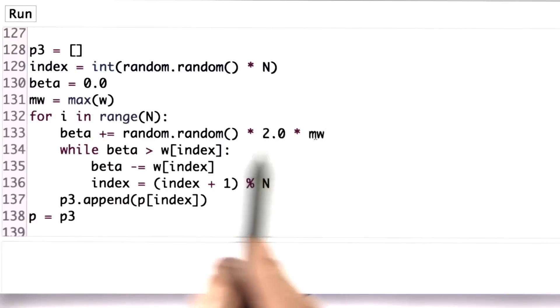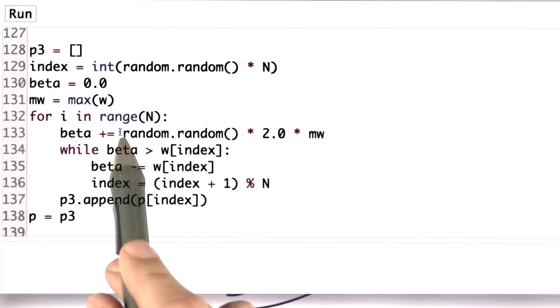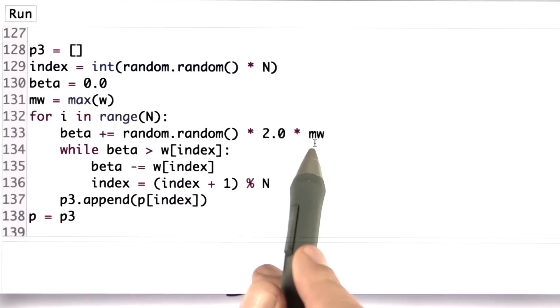Now, 2 times max weight w would be a very large step, but by adding a random variable that sits between 0 and 1, I have a uniform between 0 and 2 times mw.